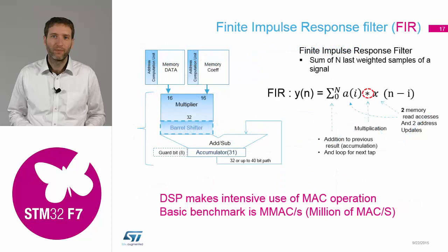If we take the Finite Impulse Response filter and the mathematics, what you need to do is multiply and accumulate many, many times to get your result. The basic benchmark of DSP is how many multiply-and-accumulate operations — these MAC operations — it can do in one second.